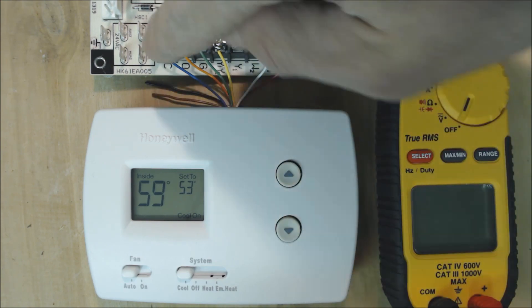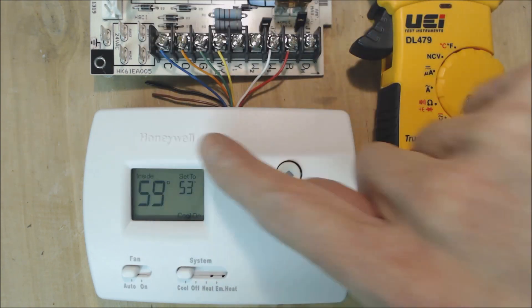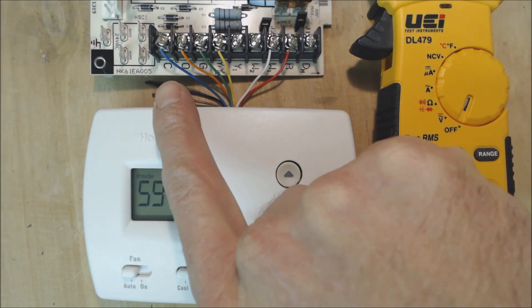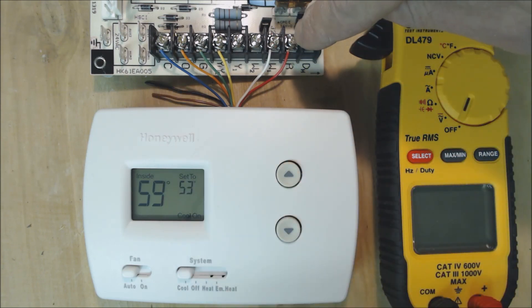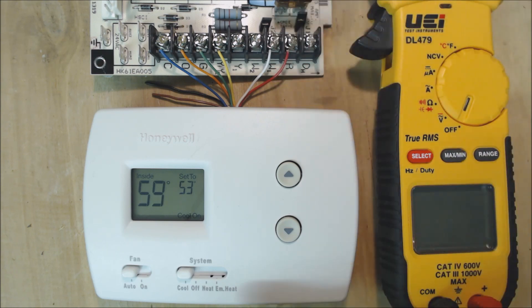It doesn't need the C wire to power the thermostat if you have batteries. However, you do need this R 24 volt power wire coming into the thermostat. W right here is for heat—that would be your emergency heat or auxiliary heat.